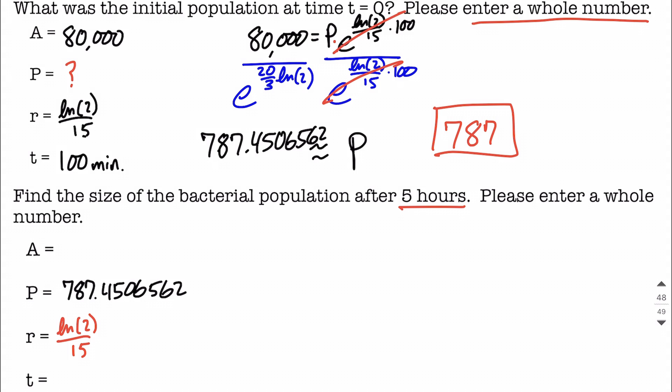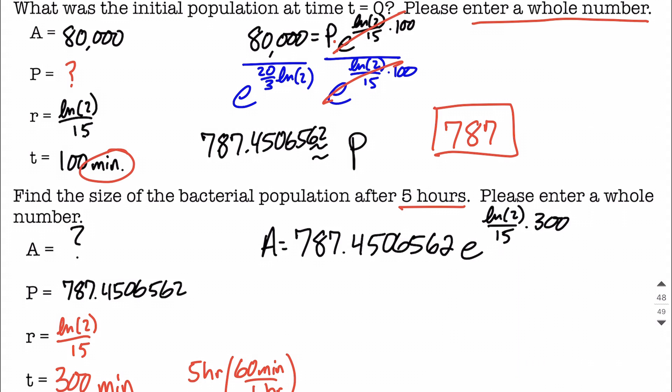Now our five hours, we have to convert that over. Remember, we were in minutes before. So because we were consistently in minutes the whole way through, we want our five hours to be converted over to minutes as well. So we're going to do five hours multiplied by 60 minutes per one hour. We're going to use 300 minutes to be equivalent to that five hours. We still don't know our accumulated amount A here. So let's fill in the same formula. A is going to equal, and again, keep all these decimal places. 787.4506562 e raised to the natural log of 2 divided by 15 multiplied by 300, our time.